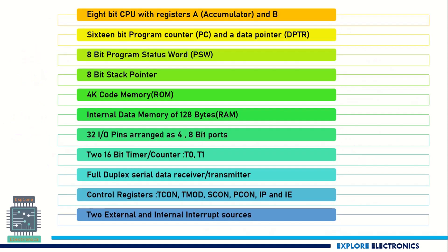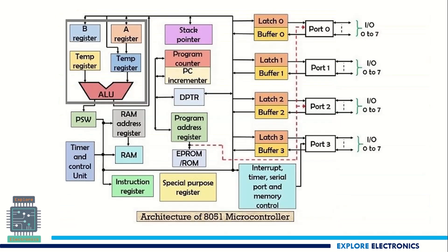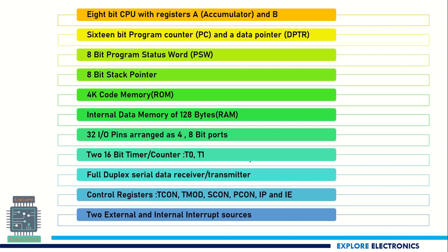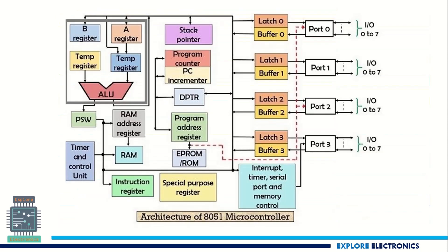A more detailed architecture diagram of the 8051 will be covered in the next video. This architecture includes extra registers such as the accumulator (A), the B register, program counter, data pointer, PSW register, and stack pointer with stack register. There are also 32-pin I/Os, two 16-bit timer/counters, full duplex serial communication, control registers, and interrupts — all to be covered in the architecture video.